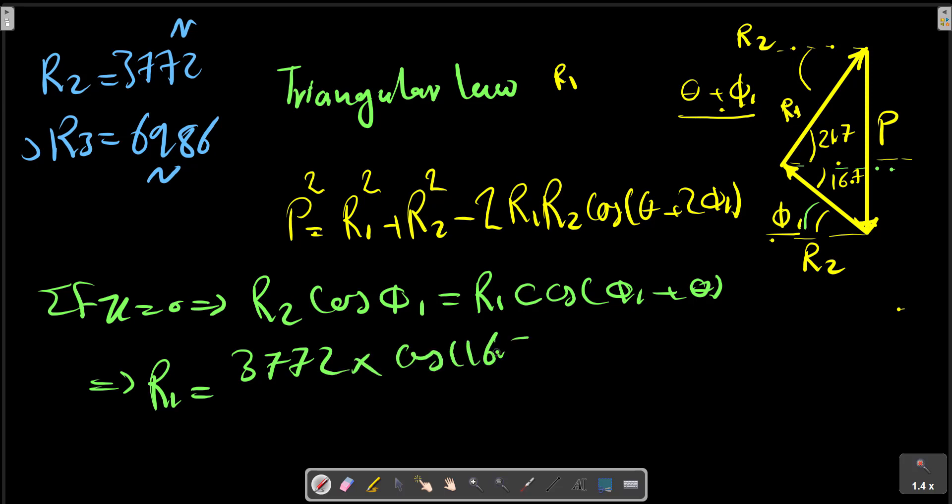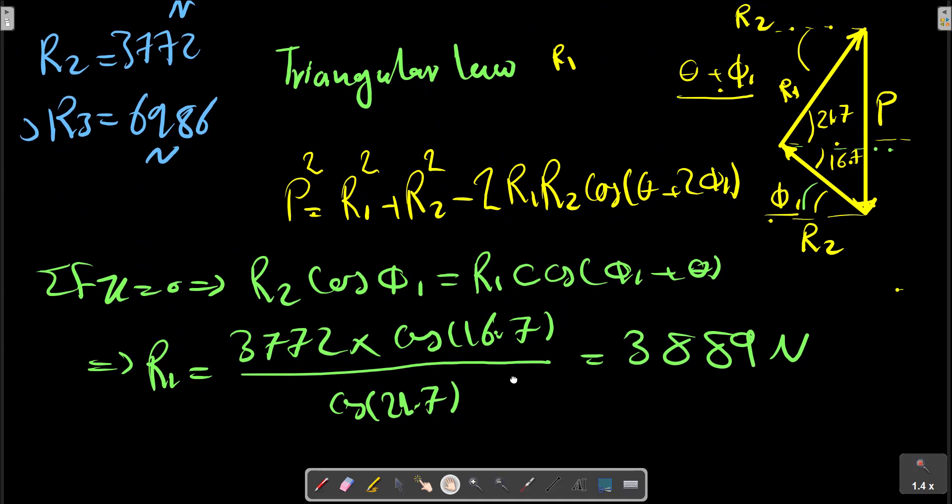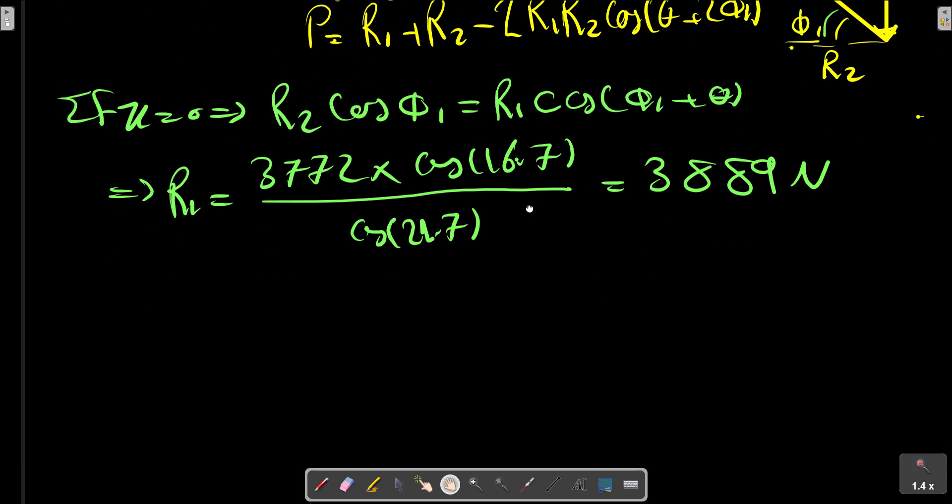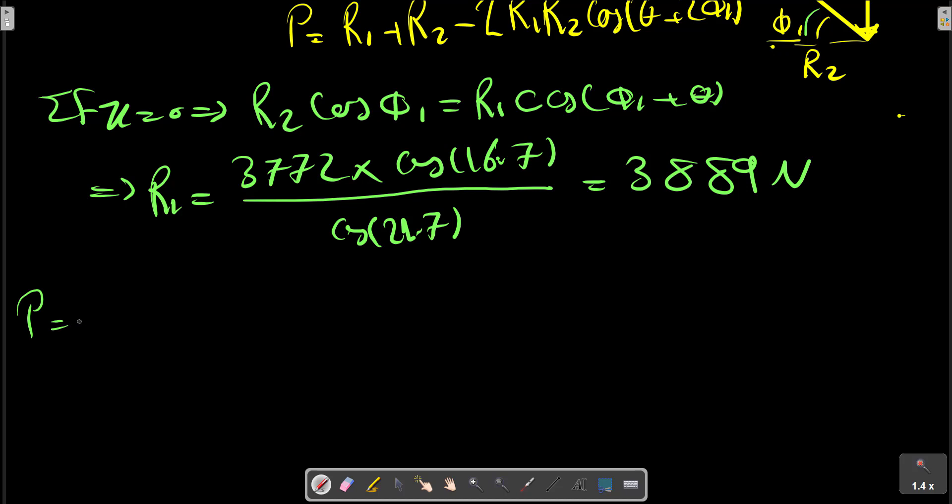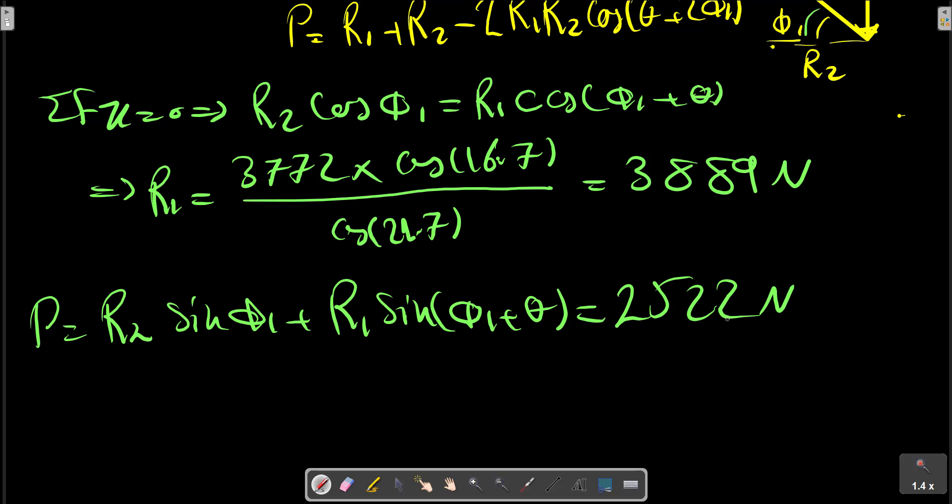So we have Newton's equations. From this relation P can be calculated: P is R2·sin(phi_1) plus R1·sin(phi_1 + theta). Newton's - in the books the calculated force is approximately correct, and our calculations are also true.